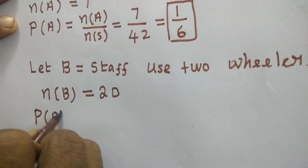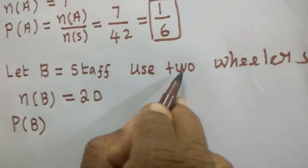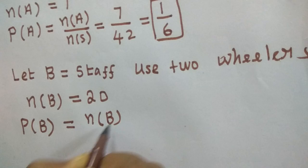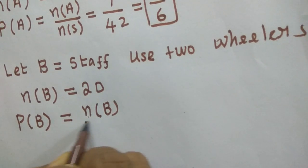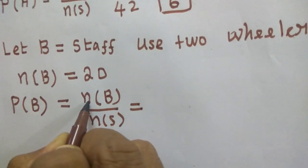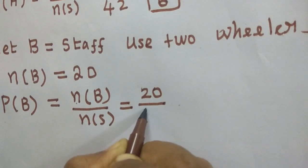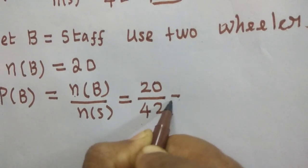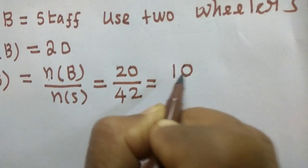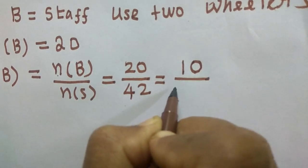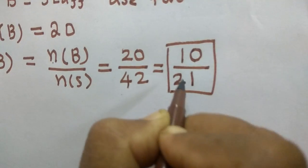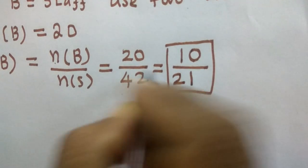P of B equal to probability of getting staffs using two wheelers. So P of B equal to N of B. You should not write N of A because we have taken the event as B. So N of B divided by N of S. You substitute. N of B is 20 divided by N of S is 42. Here also you have to give it in simplest form. 10 times 2 is 20, 2 times 2 is 4, 1 times 2 is 2. Further you won't be able to reduce. So 10 by 21.